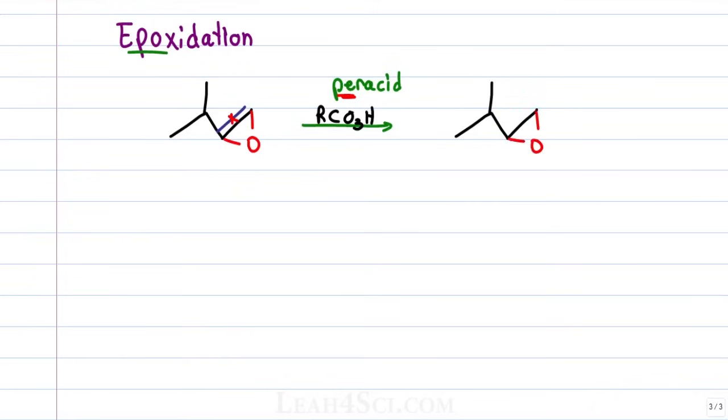Since the oxygen is attached to both carbons, by default it has to be a syn addition because there's no way to have it attached to the same carbons and somehow be on opposite faces of the pi bond. A common peracid that you'll see is MCPBA. When you see that, instantly recognize an epoxide as the product.